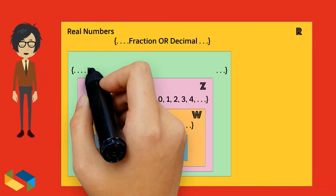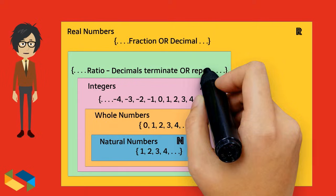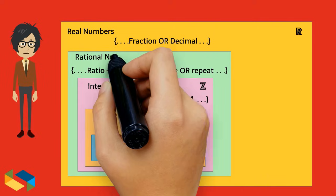So the numbers that can be expressed as ratio of integers, where the decimals terminate or repeat, are called rational numbers.